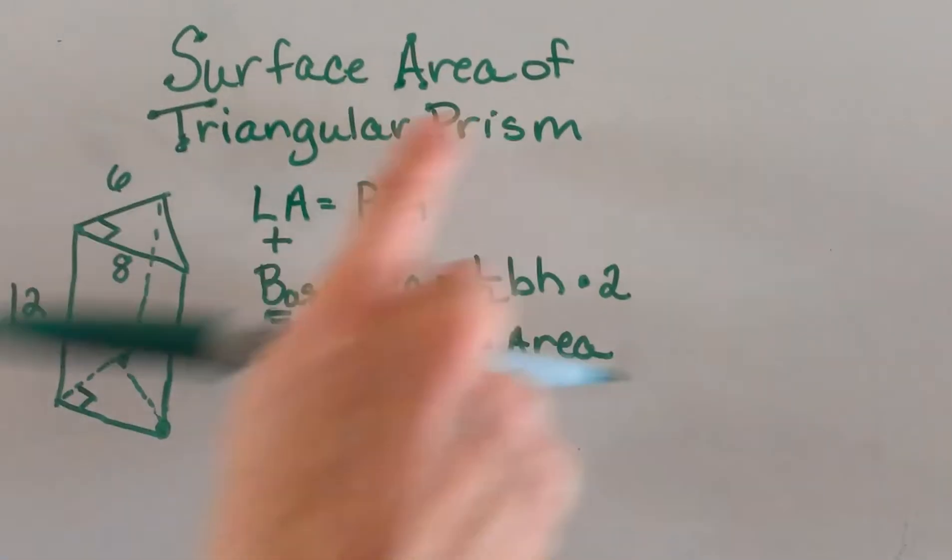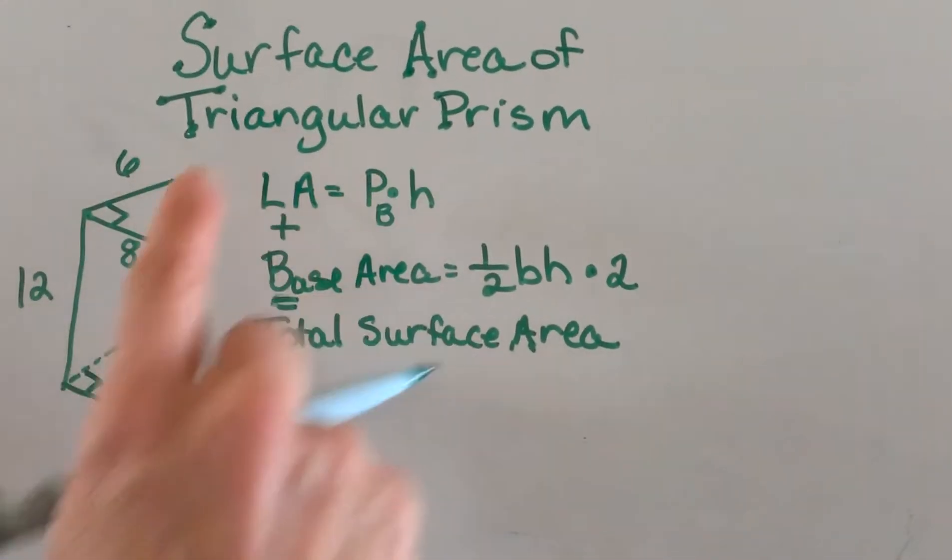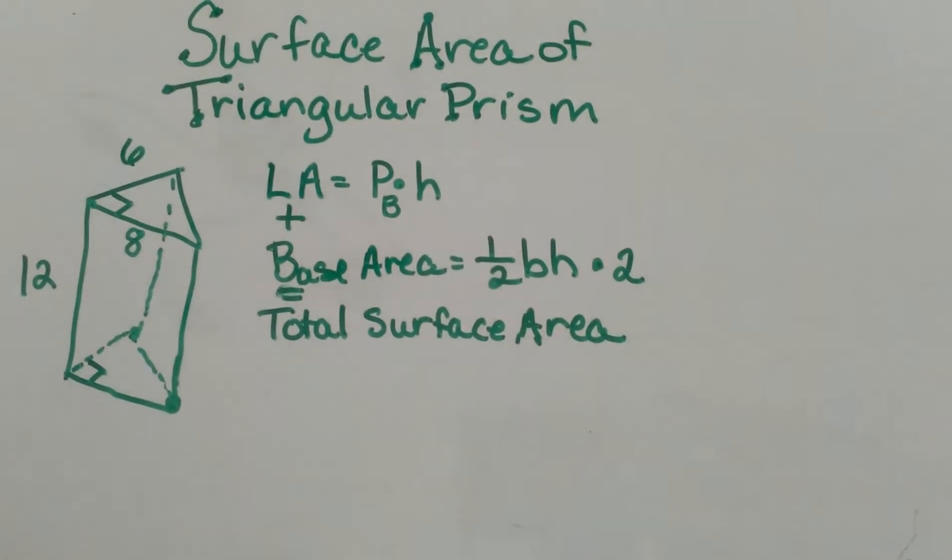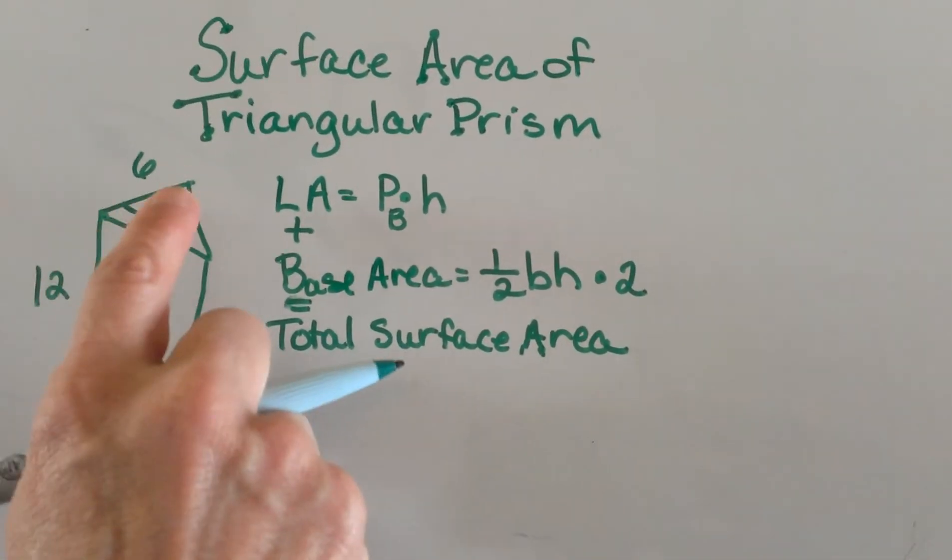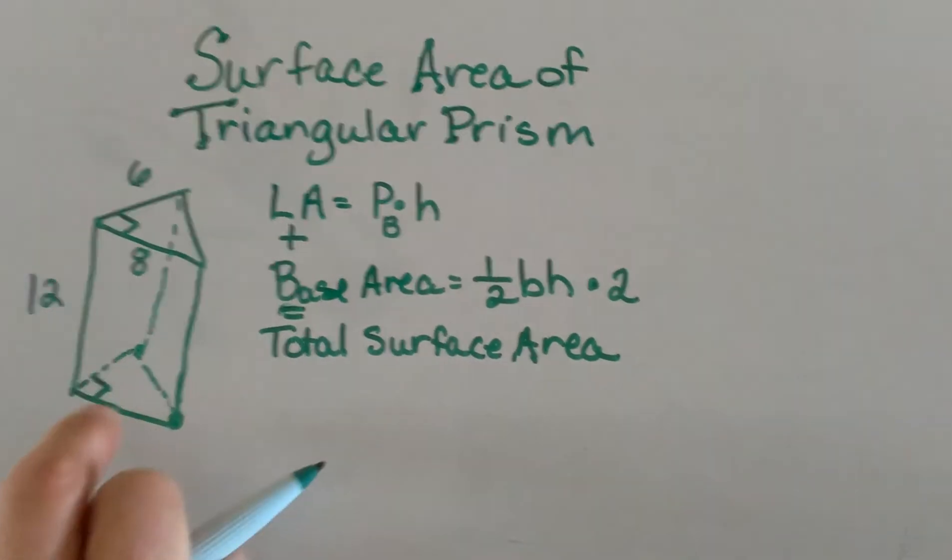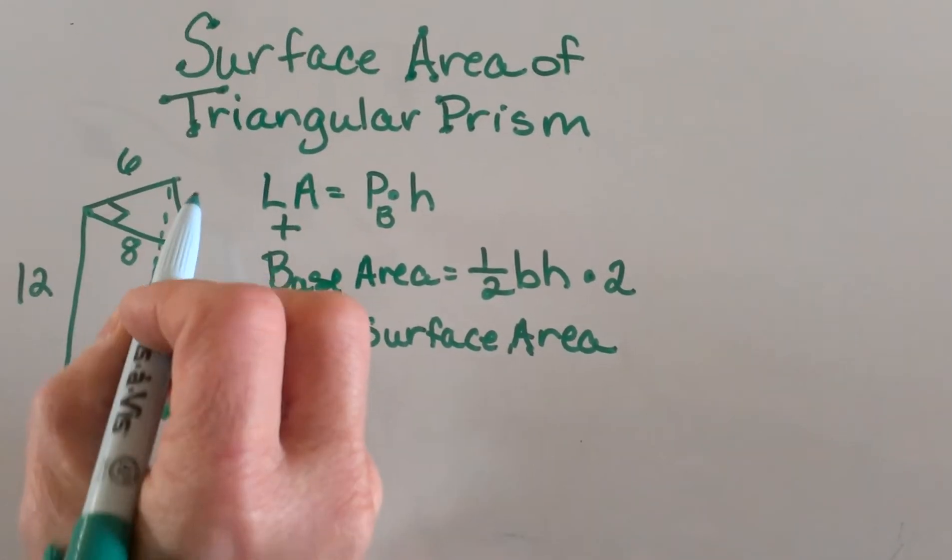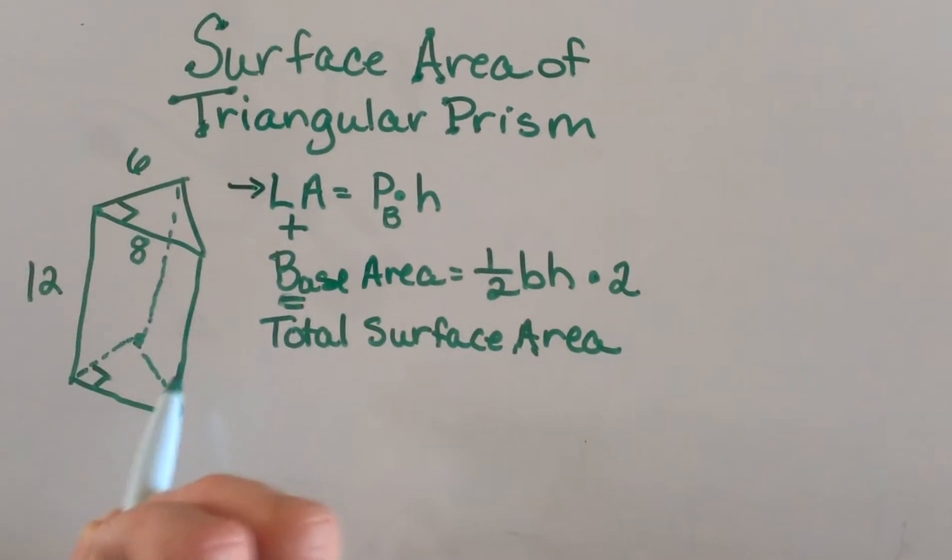Today we're going to look at how to find the surface area of prisms, starting with a triangular prism. A triangular prism is a prism whose base is a triangle - that's how they're classified. There are two parts to finding the surface area.